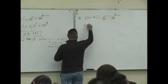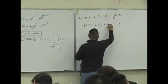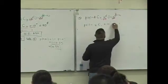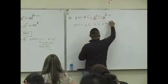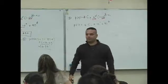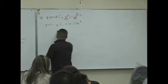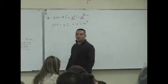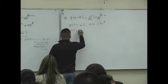P of 1 is gonna be 8C1 times 0.10 to the 1 times 0.90 to the... what's 8 minus 1? 0.90 to the 7. Good.